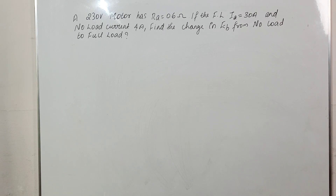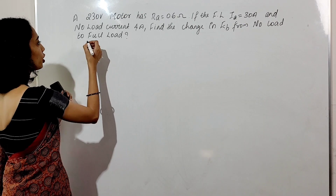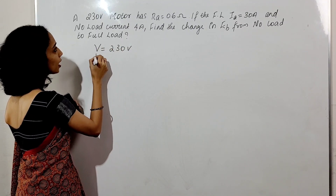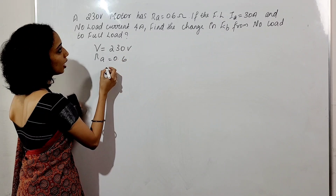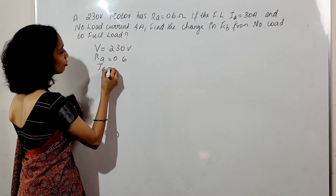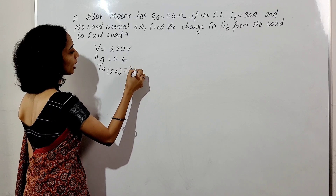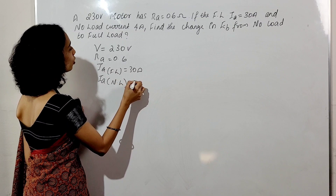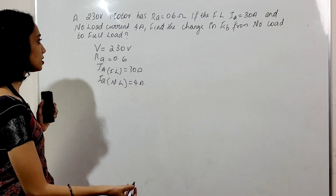Next question: a 230 volt motor has armature resistance RA equal to 0.6 ohm. Full load armature current is 30 A and no load armature current IA0 is equal to 4 A. Find the change in back EMF from no load to full load.